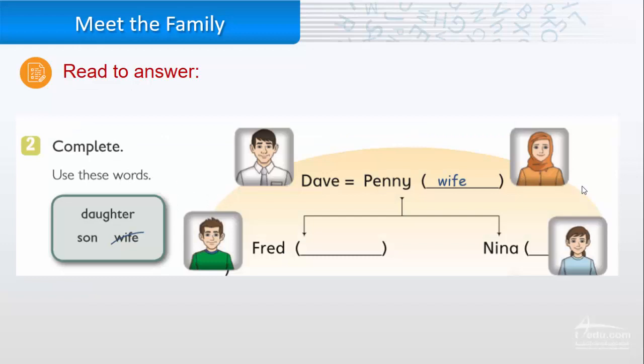This is the family tree. Here we have Dave and Penny. Who is Penny? She is Dave's wife. Here we cross the word wife. Now we have daughter and son. Who is Fred? Fred is Dave's son. And who is Nina? Nina is Dave's daughter.